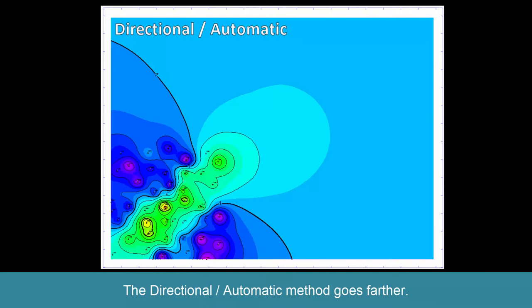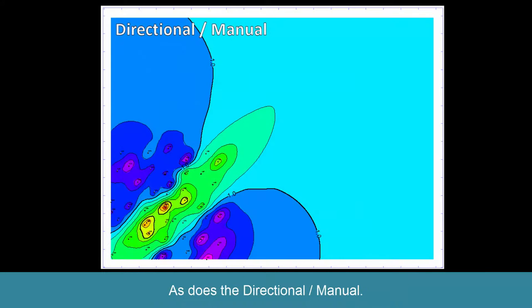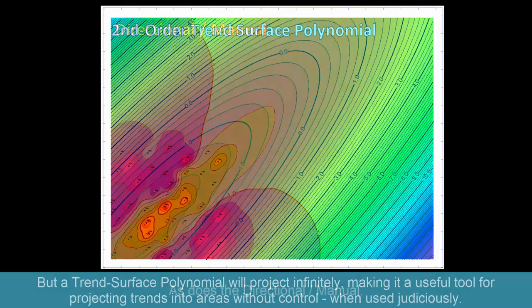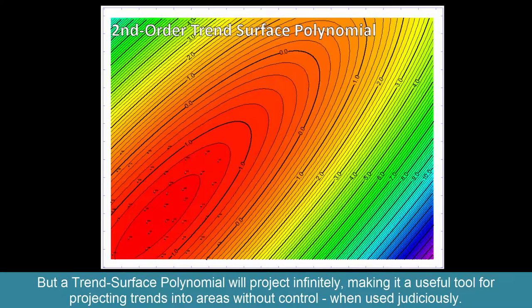The directional automatic method goes farther, as does the directional manual. But a trend-surface polynomial will project infinitely, making it a useful tool for projecting trends into areas without control when used judiciously.